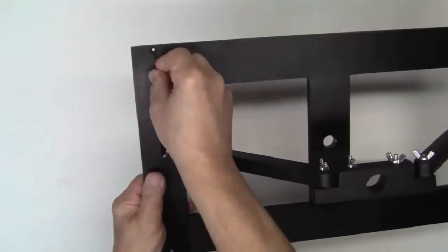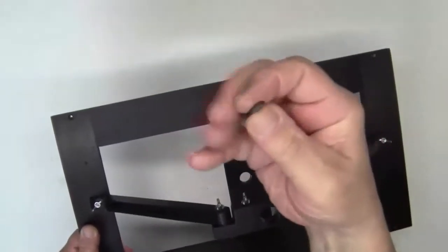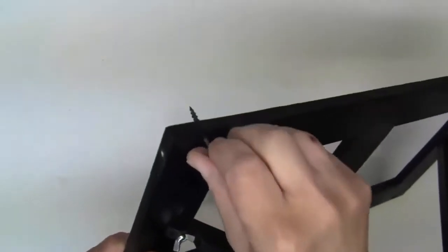Now you notice I drilled the four clearance holes for the one and five-eighth inch drywall screws, and that just goes right through.